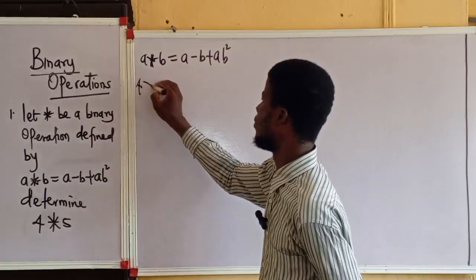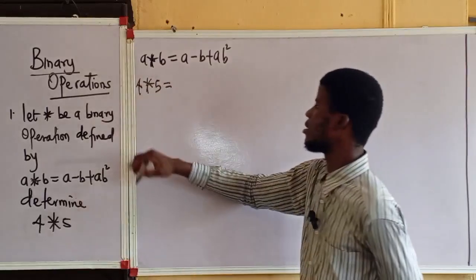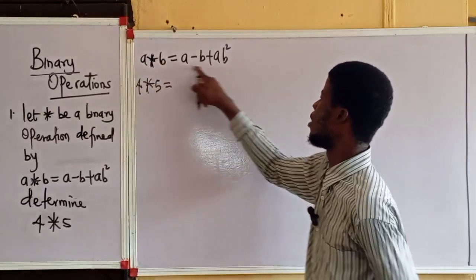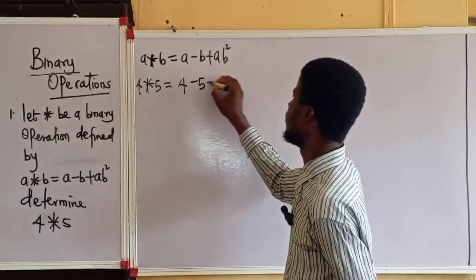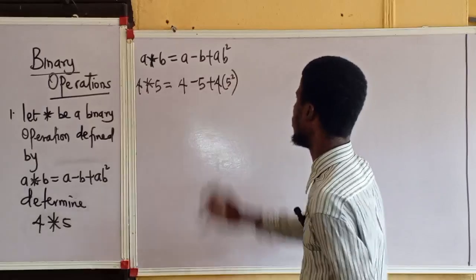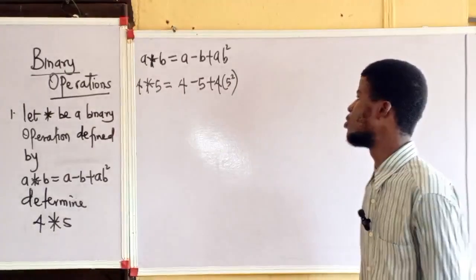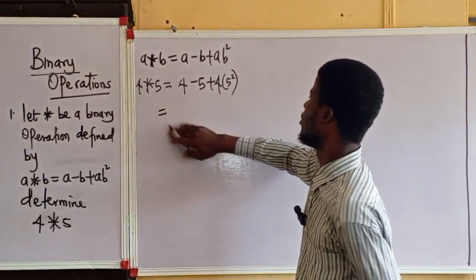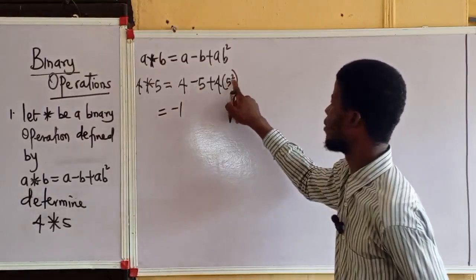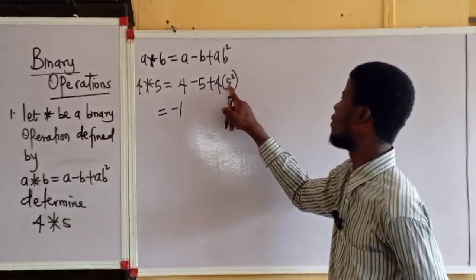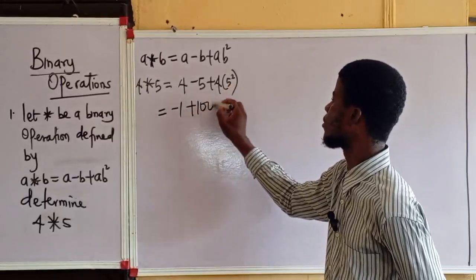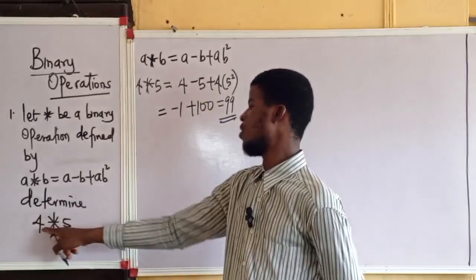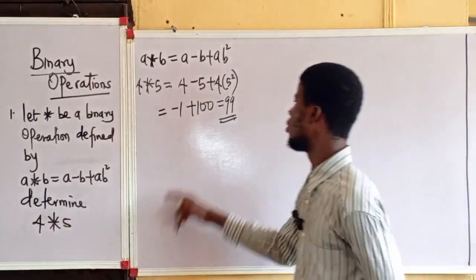So if I am to determine 4 operation 5, it means that in place of a I'll write 4, and in place of b I'll write 5. This will now be 4 minus 5 plus 4 times 5 raised to the power 2. We substituted 4 for a and 5 for b. We have 4 minus 5 is minus 1, 5 to the power of 2 is 25, 4 times 25 is 100. So 4 operation 5 is equal to 99.